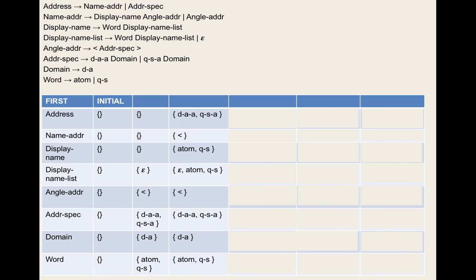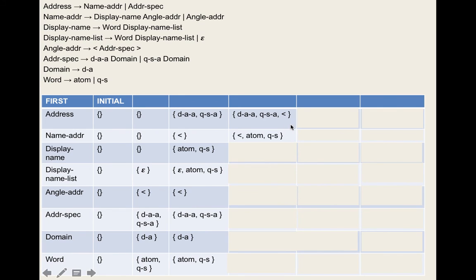The second condition: if epsilon is in the first set of A, then first(A) intersected with follow(A) must be empty. So if a non-terminal can produce nothing, you must be able to tell whether to parse A again or let it go to epsilon, based on the next symbol.